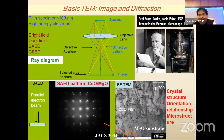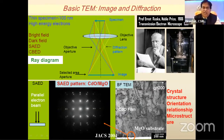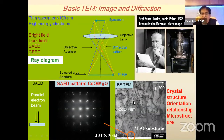Professor Ruska, who built the first TEM in 1931, received the Nobel Prize in 1986. Here is a bright field TEM image of cadmium oxide on an MgO substrate, along with the corresponding selected area electron diffraction pattern. By understanding the microstructure and analyzing the electron diffraction pattern, one can perform structure and microstructure analysis.